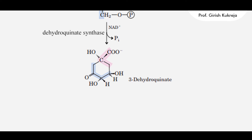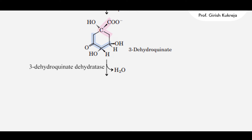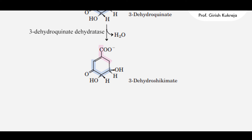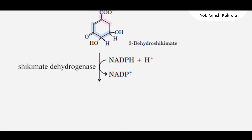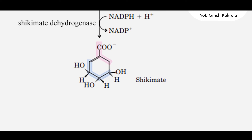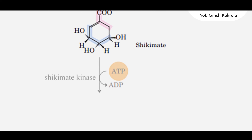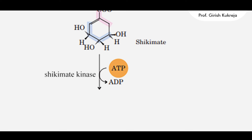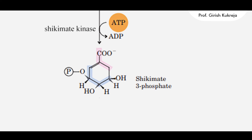3-dehydroquinate is acted upon by 3-dehydroquinate dehydratase, which catalyzes dehydration — removal of water — to form 3-dehydroshikimate. The 3-dehydroshikimate then undergoes reduction catalyzed by shikimate dehydrogenase, using NADPH as the cofactor. NADPH is converted to NADP+ and results in the formation of shikimate. Shikimate then undergoes phosphorylation with ATP, catalyzed by shikimate kinase, forming shikimate-3-phosphate.